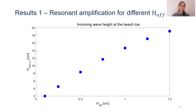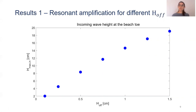This is only the incoming wave height, which is around 25% of the water depth of 80 centimeters. If you think about the total wave height, which is around two times the maximum incoming wave height, you will get around 40 centimeters of wave height at the beach toe. Comparing again to the water depth of 80 centimeters, it means that it's reaching a wave height of 50% of the water depth.